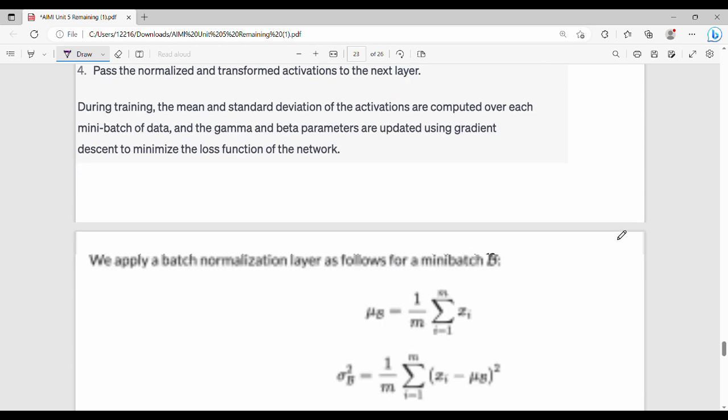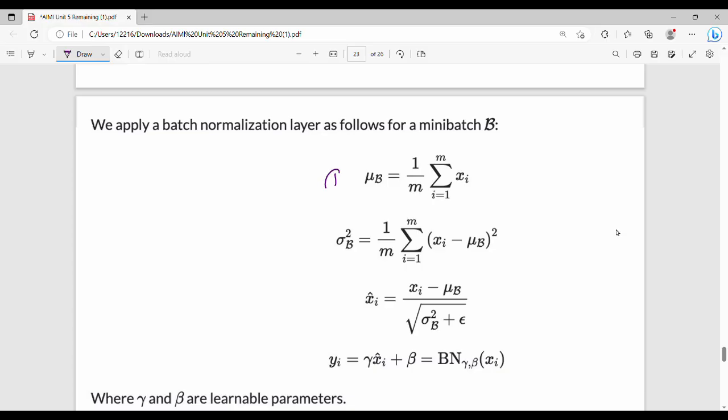Looking at the equations: Mean is 1 by m, where m is number of neurons, summation of i equal to 1 to m of x_i. Then standard deviation uses the normal formula. The normalization formula is x_i minus mean divided by standard deviation, where epsilon is a smoothing term. Then we scale and shift: gamma times x_i_norm plus beta. This gives us the batch normalized output with gamma and beta parameters.